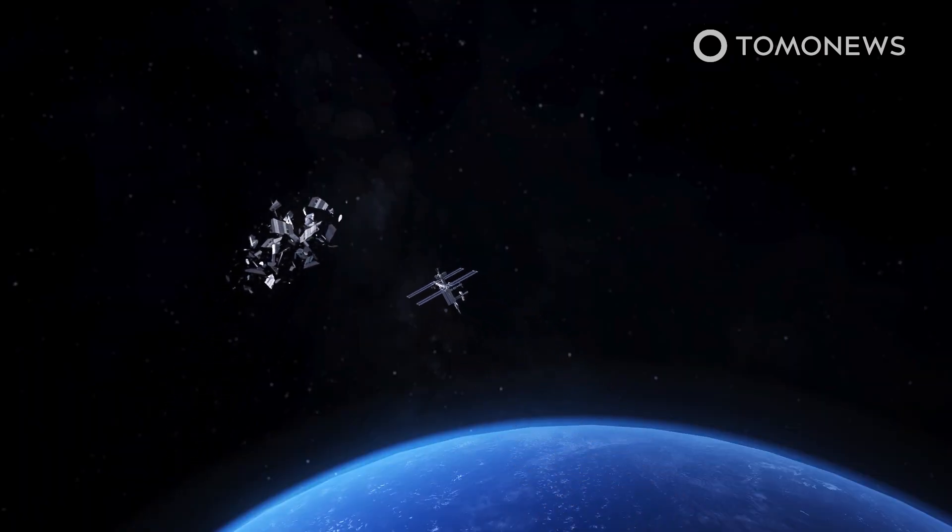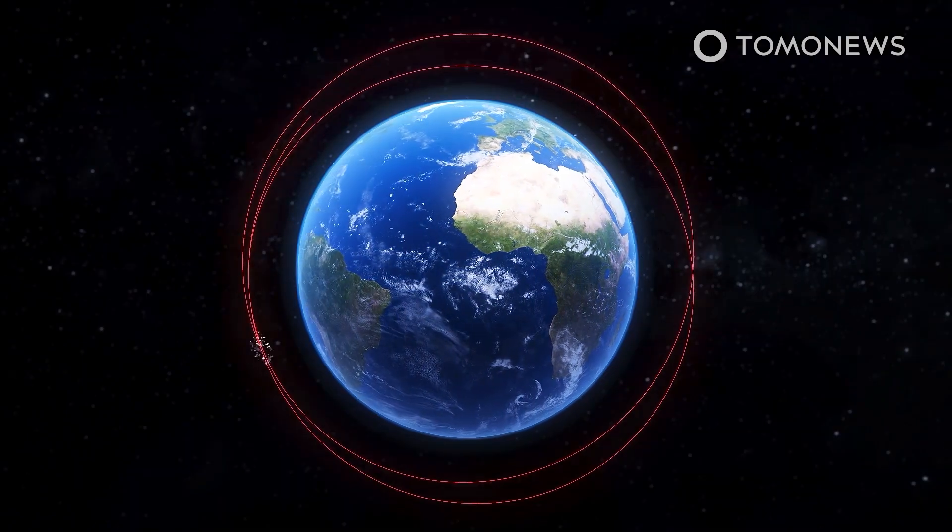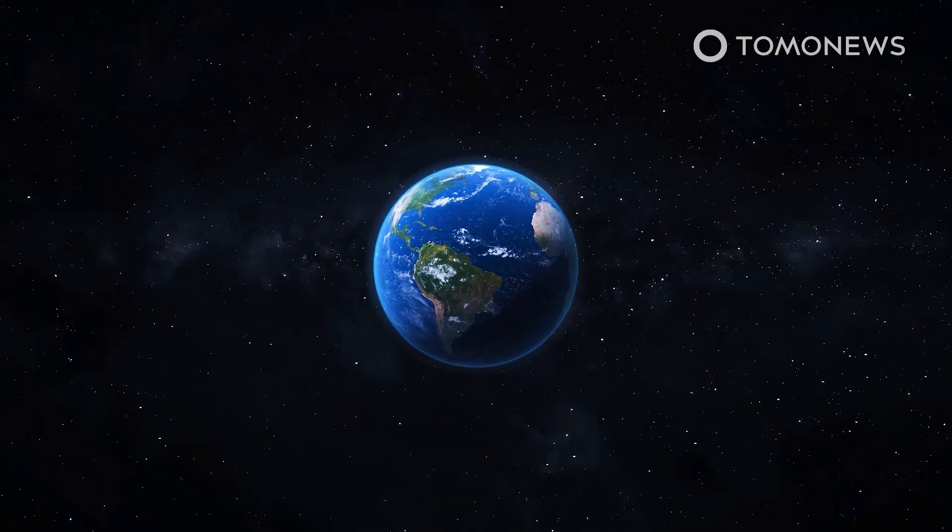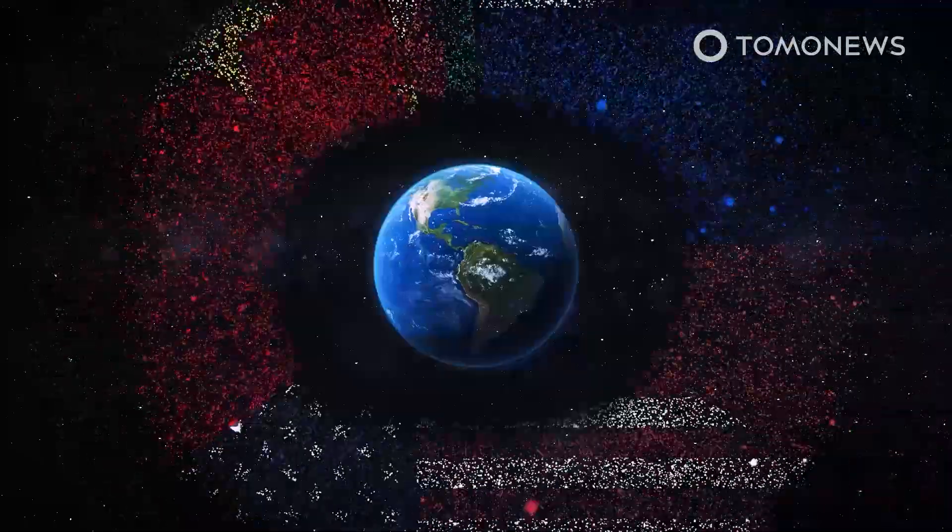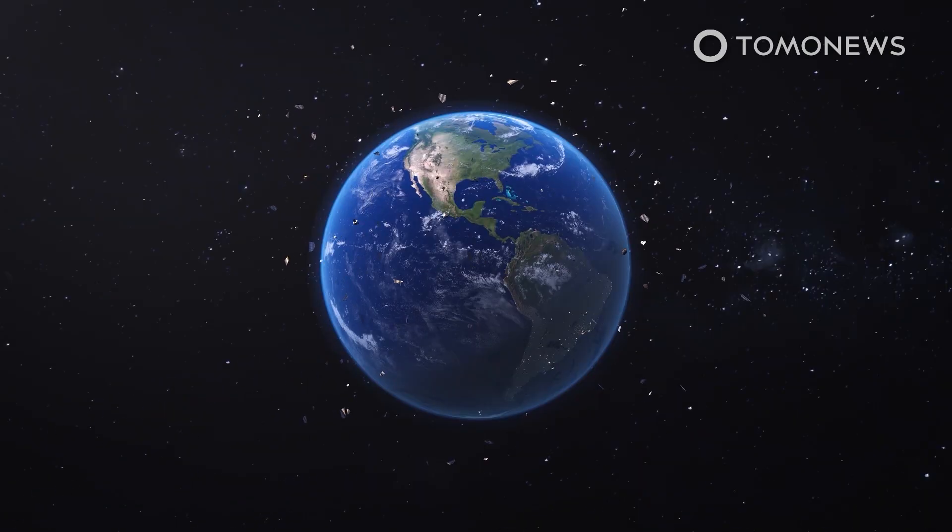According to Space.com, spaceflight safety experts now view Starlink as the top source of collision danger in Earth's orbit. And some scientists even worry that the amount of metal that will be burning up in Earth's atmosphere, as old satellites are deorbited, could trigger unpredictable changes to the planet's climate.